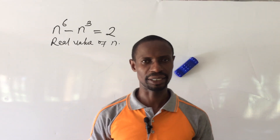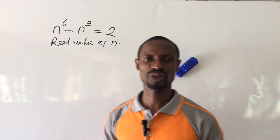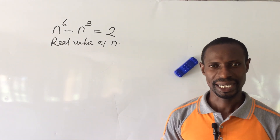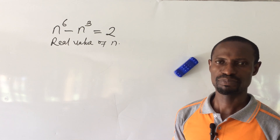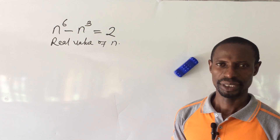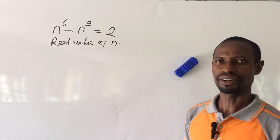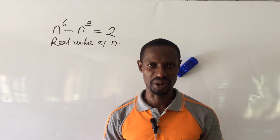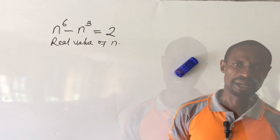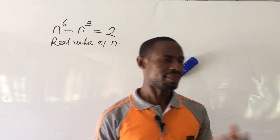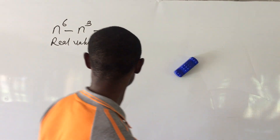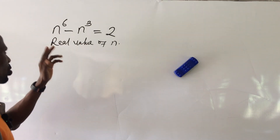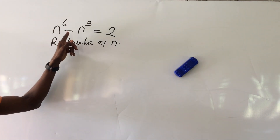Welcome everyone to my channel. In today's tutorial, we have an international math olympiad problem. We have to solve for the real value of n from this equation. If you take a look at this question, this is a polynomial equation and it's of 6th degree.